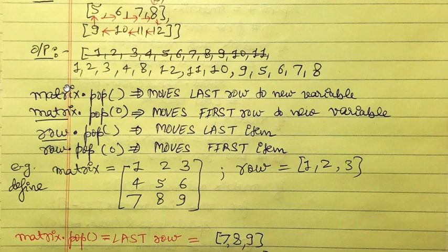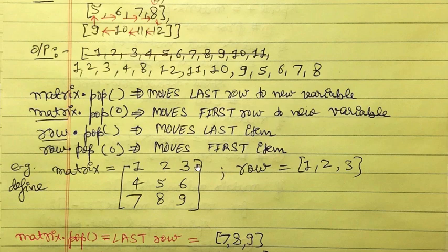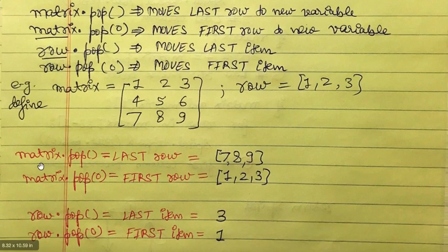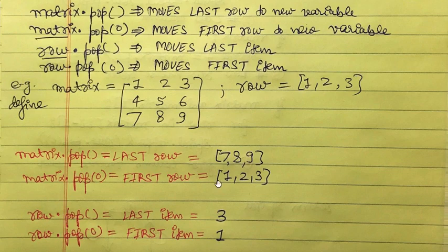For a one-dimensional row vector, `row.pop()` returns the last item and `row.pop(0)` returns the first item. For example, with matrix = [[1,2,3],[4,5,6],[7,8,9]] and row = [1,2,3]: `matrix.pop()` gives [7,8,9], `matrix.pop(0)` gives [1,2,3], `row.pop()` gives 3, and `row.pop(0)` gives 1.